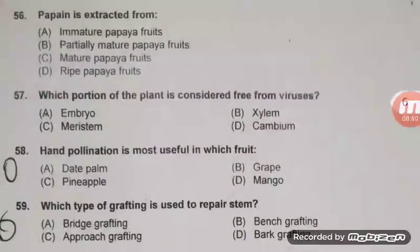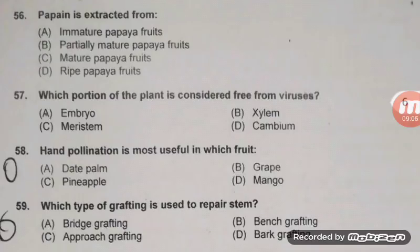Papain is extracted from immature papaya fruit — right answer A. Which portion of the plant is considered free from virus? Right answer C — meristematic region. Why is it free from virus? First, the rate of cell division at the meristematic zone is maximum; second, absence of vascular bundle; and third, high level of auxin leads to the development of virus-free plants.